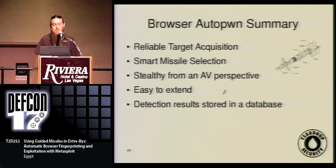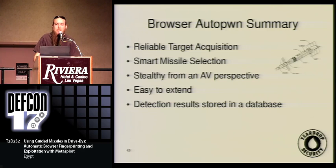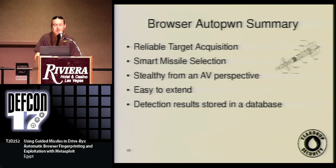Here's a quick summary. We've got reliable target acquisition — we can reliably determine who our client is and what operating system they're running. We've got smart missile detection — we only send exploits that might work, and we don't send exploits that are more likely to crash or hang the browser or do a heap spray unnecessarily, causing the user to potentially click away. We're stealthy in the sense that it's difficult for AV to detect us, and it's really easy to write new exploits. All of our detection results are stored in a database.